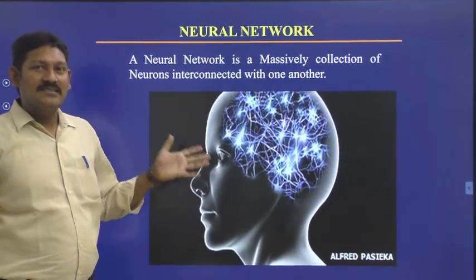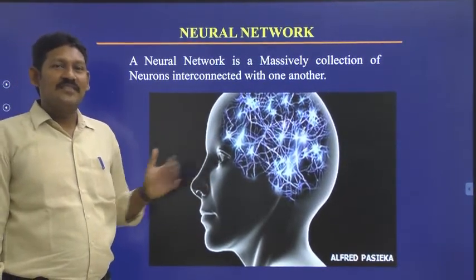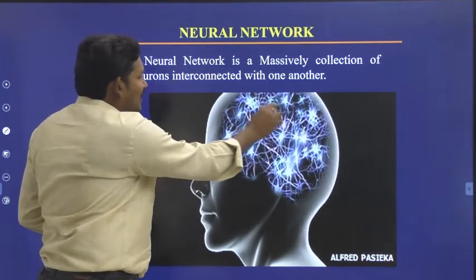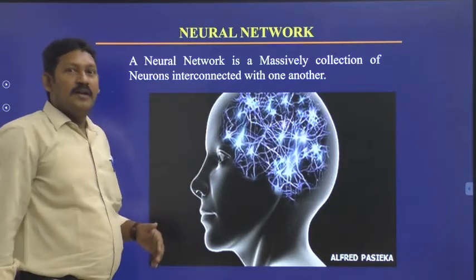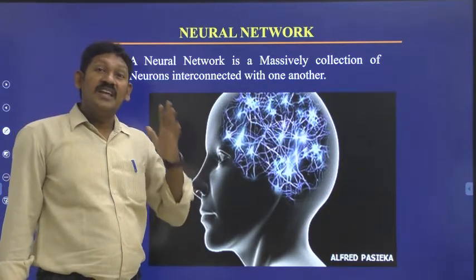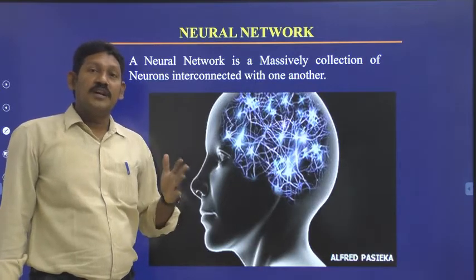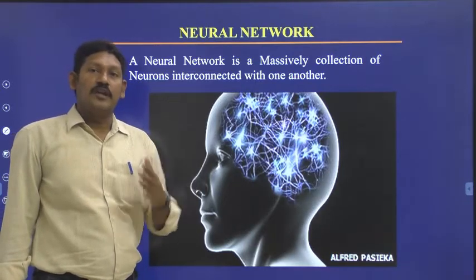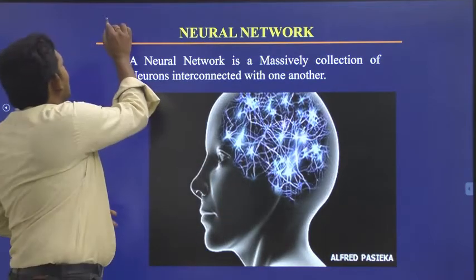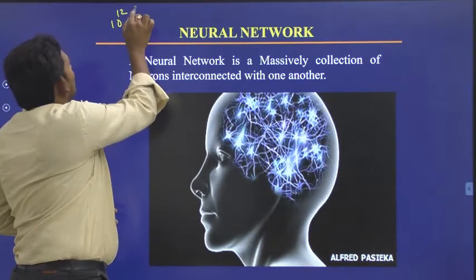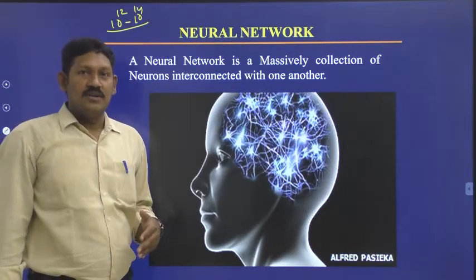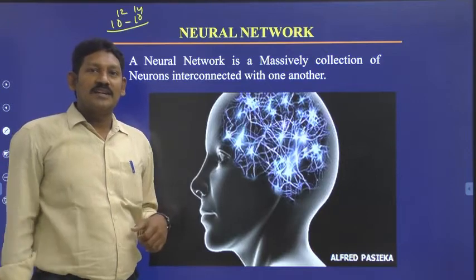A Neural Network is nothing but a massively connected collection of neurons interconnected with one another. All these are neurons inside the human brain. Every human brain consists of approximately 10 to the power 14 neurons — billions of neurons — all interconnected with one another.